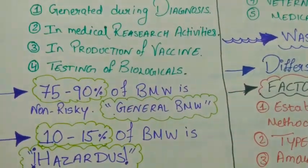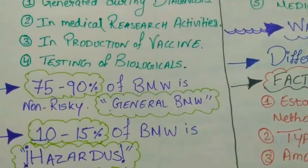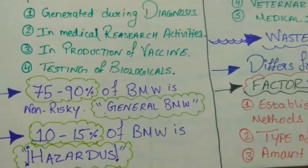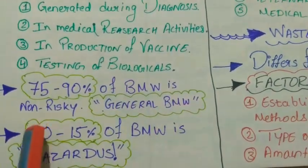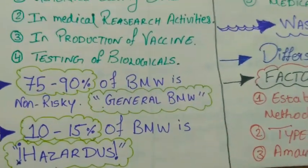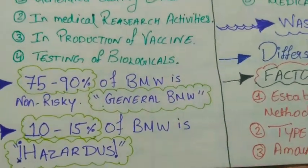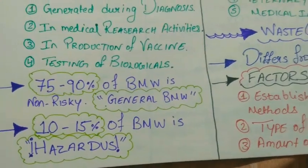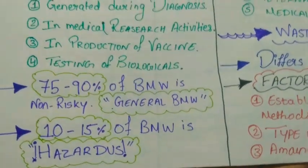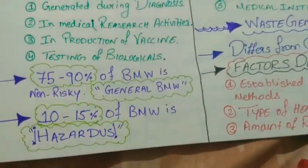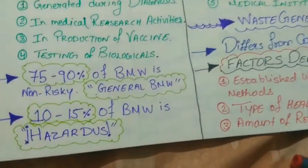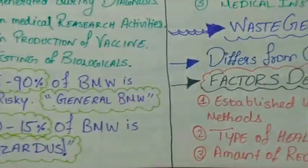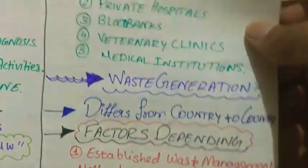Out of the entire biomedical waste products, 75 to 90% are termed non-risky and are classified as general BMWs — general biomedical waste products. The remaining 10 to 15% of waste products are termed hazardous, meaning dangerous.